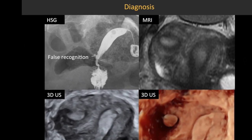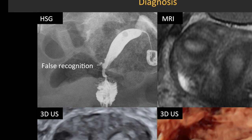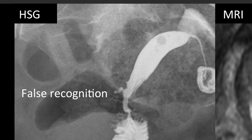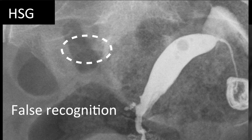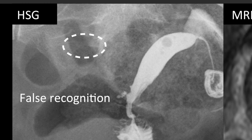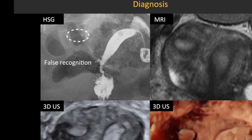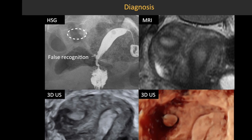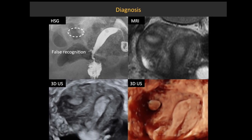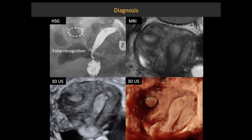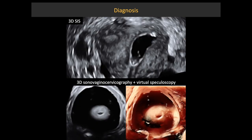Preoperative diagnostics are a crucial step for appropriate management. Hysterosalpingography or hysteroscopy alone gives a false recognition and appears as a unicornuate uteri. MRI or 3D ultrasound are accurate tools for diagnosis as they allow visualization of the external and internal structure of the uterus. 3D saline infusion sonohysterography is helpful for understanding the internal structure, especially when the endometrium is not clearly visible, and may confirm the lack of communication between contralateral cavities.